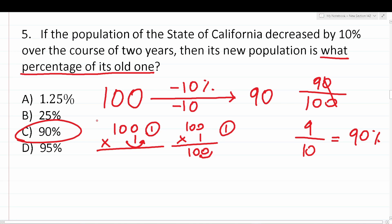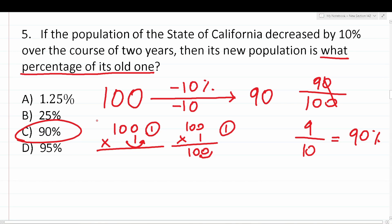All you have to do is pick easy numbers to work with. Do exactly what the problem says — subtract 10% from the original population — and then figure out what the new population is in terms of the old population. Nothing more to it than that.